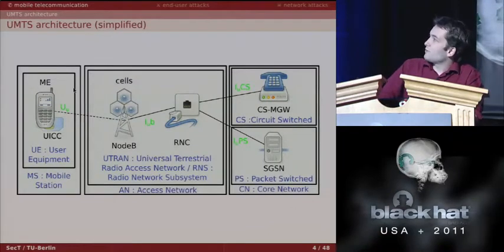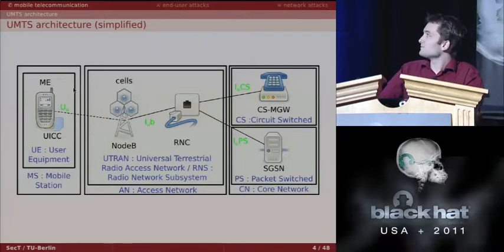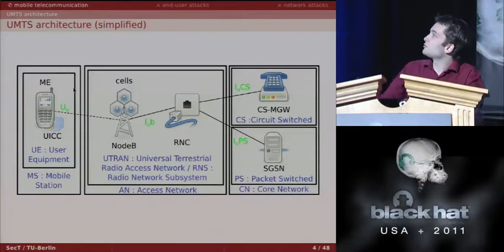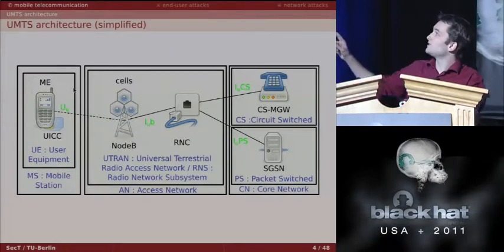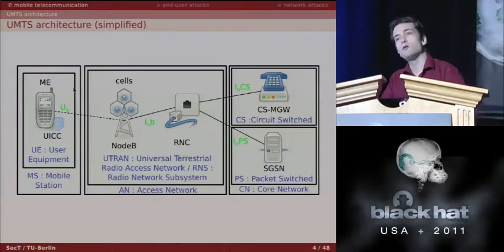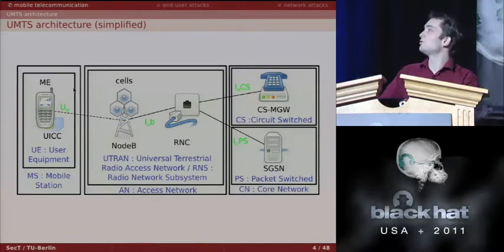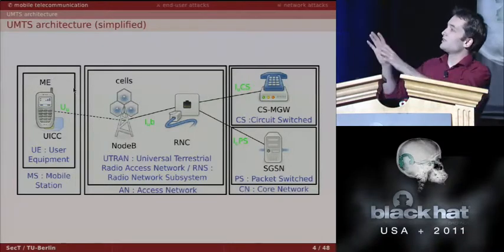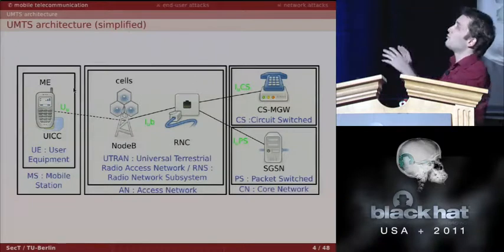On the left side we have the mobile station — the normal mobile phone. It connects to the Node B, the antennas you see on rooftops. The Node B is controlled by the RNC, the radio network controller, which also links to the core network where all calls and data traffic are routed. The access network only binds the mobile station to the core network.